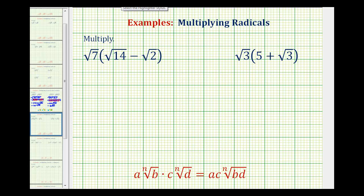Now we'll perform distribution involving radicals. And for a quick review, to multiply radicals, as long as the index is the same, we multiply the coefficients, then we multiply the radicands, and then simplify the product if possible.